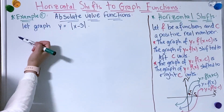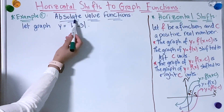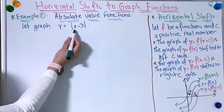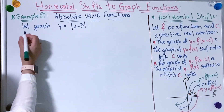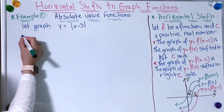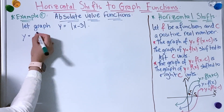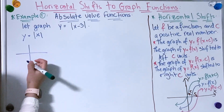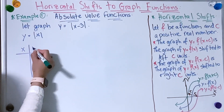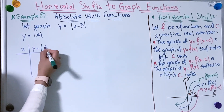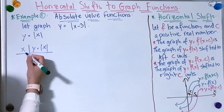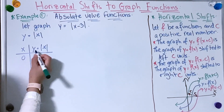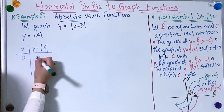Now let's move to the first example. I'm going to start with the absolute value function. So let's take the graph y = |x − 3|. First we're going to graph y = |x|. So let's start with the table. We have x and y = |x|. I'm going to take random numbers. Let's take 0: |0| = 0.